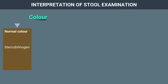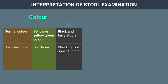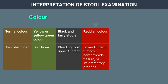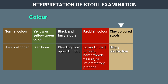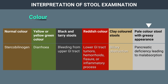Normal colour of stool is due to the presence of stercobilinogen, or yellow-green colour is seen in diarrhoea. Black and tarry stools may be seen due to bleeding from the upper gastrointestinal tract. Reddish colour is seen in lower GI tract tumours, hemorrhoids, fissure, or inflammatory process. Clay-coloured stools are due to biliary obstruction, and pale-coloured stools with greasy appearance are due to pancreatic deficiency leading to malabsorption.